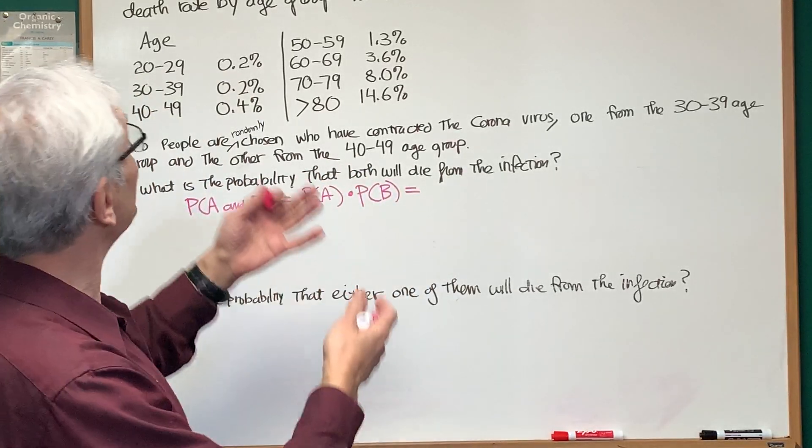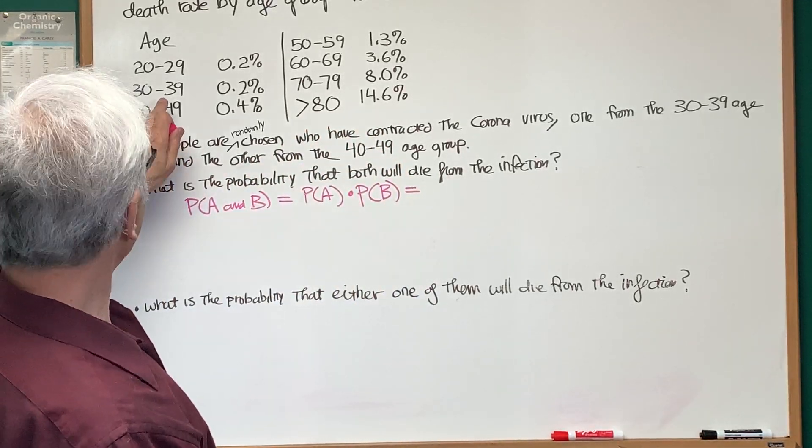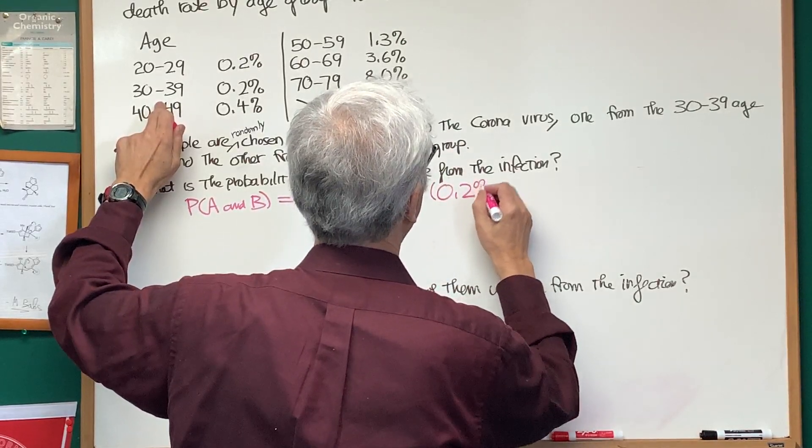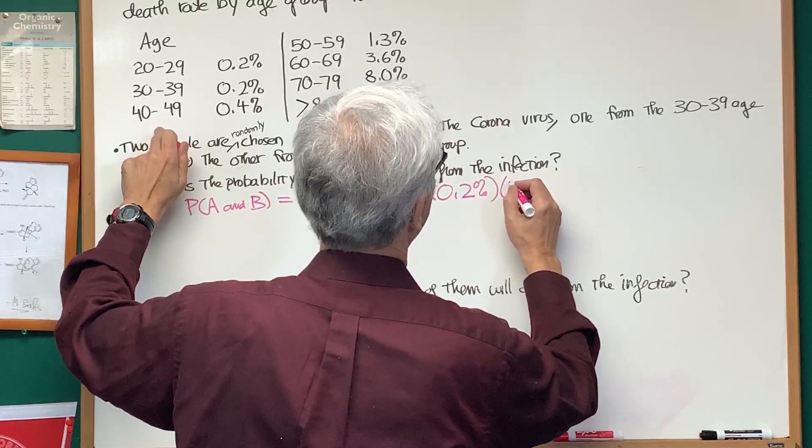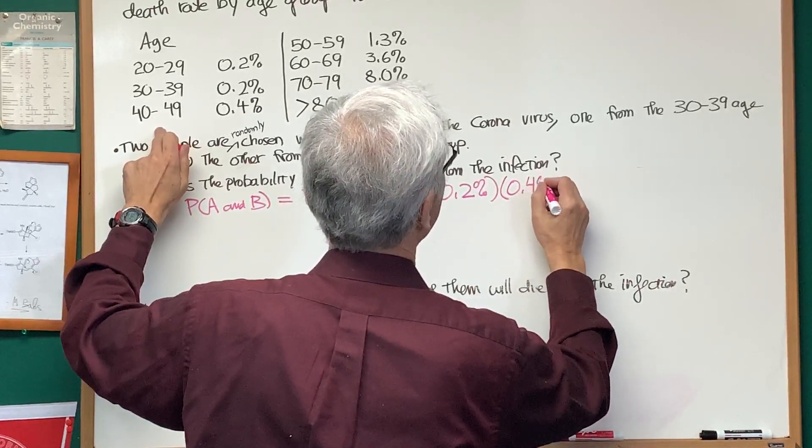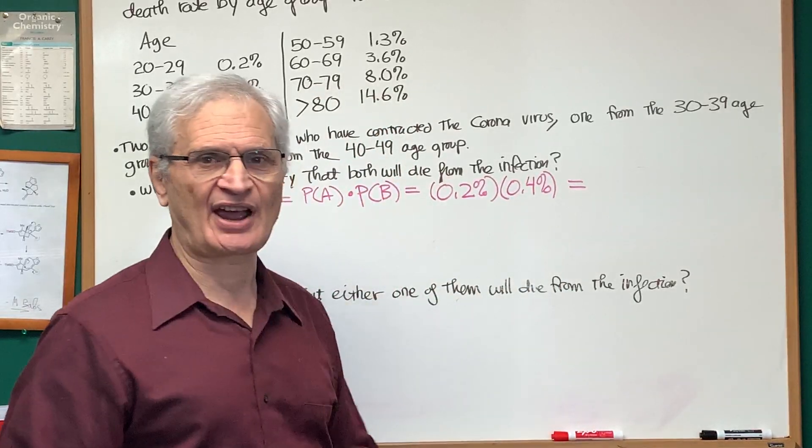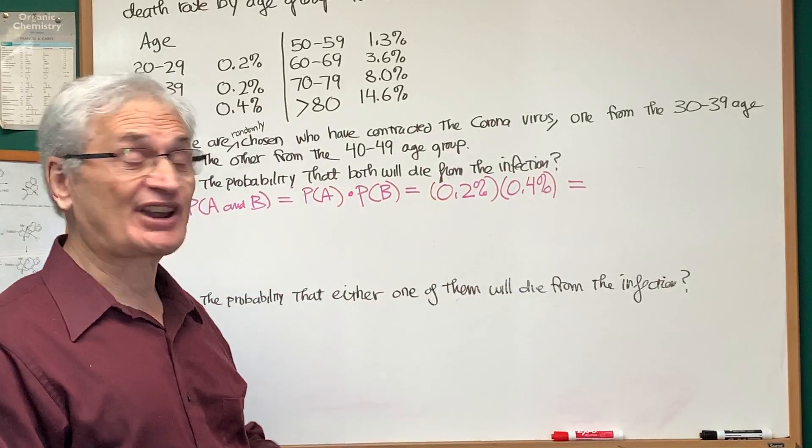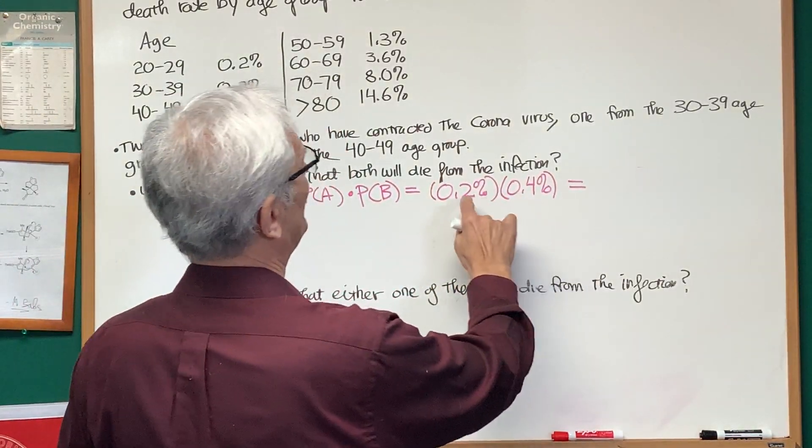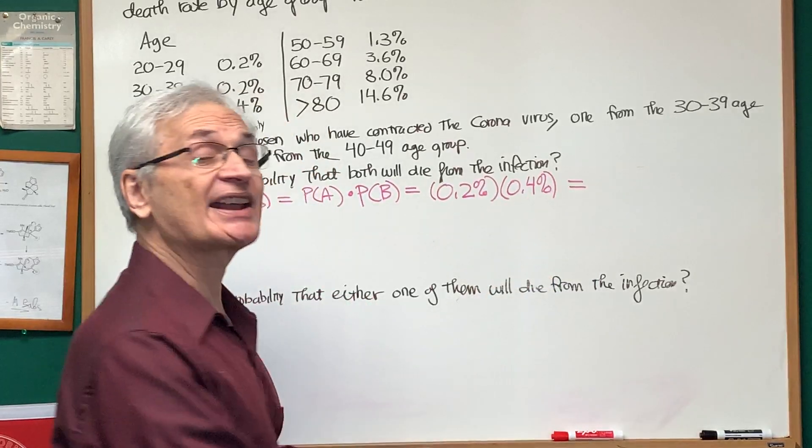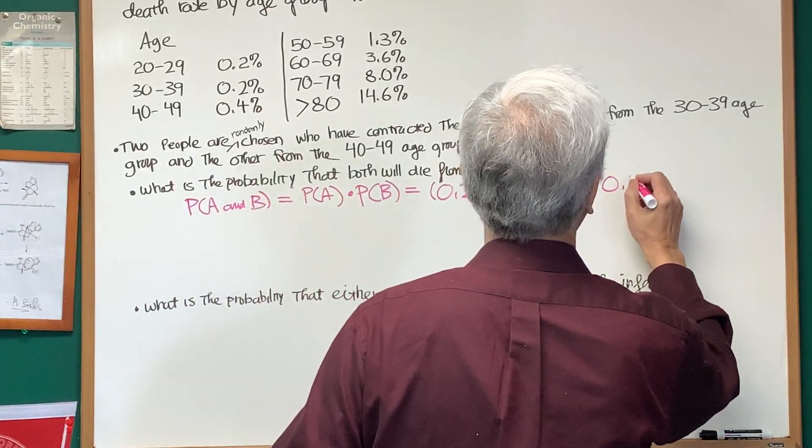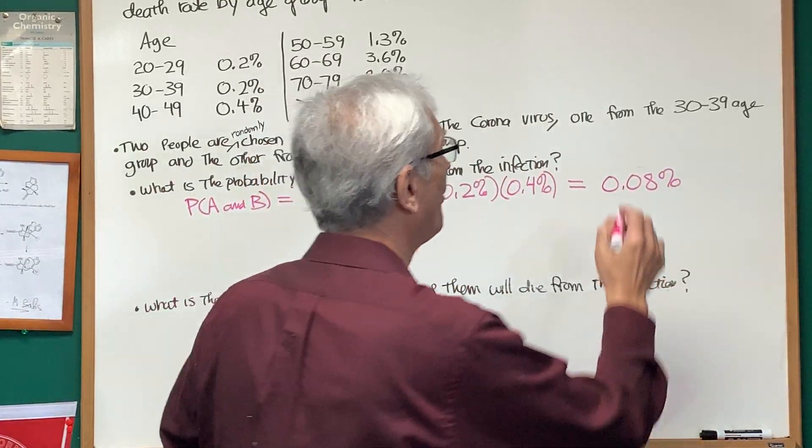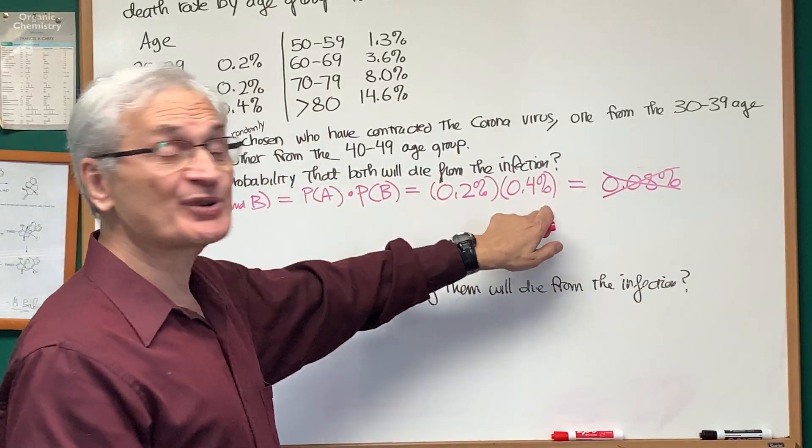So the probability of dying is exactly the death rate. From the 30 to 39 age group, it's 0.2%, and from the 40 to 49 age group, it's 0.4%. Now we multiply these two together. Just a little advisory: Many students, when multiplying these two together, will say, Okay, how do I multiply a decimal? It's 2 times 4 is 8, and I pick up two decimal points, so they would write 0.08%. And that is totally wrong.